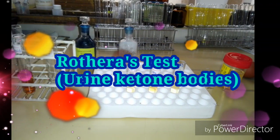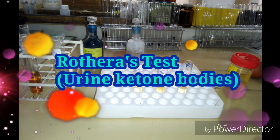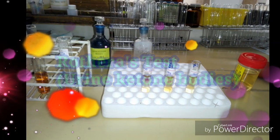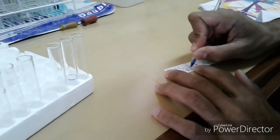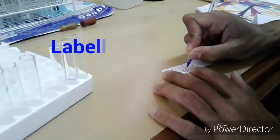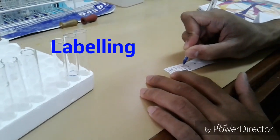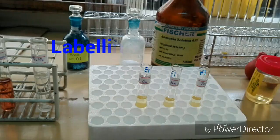Hi friends, welcome back to Star Laboratory. Today let's discuss the Rothera test, which is used to detect ketone bodies present in urine. As a first step, we take three test tubes and label them as positive control, negative control, and one for the test.